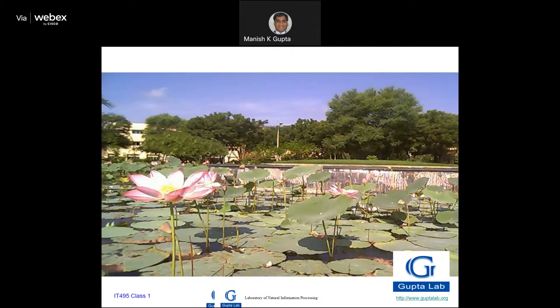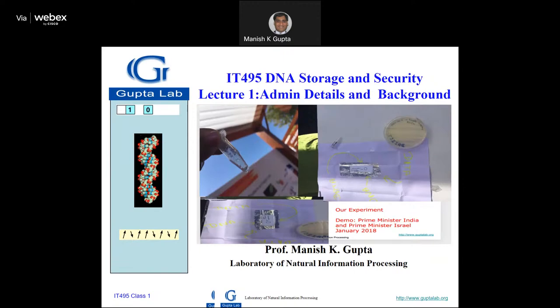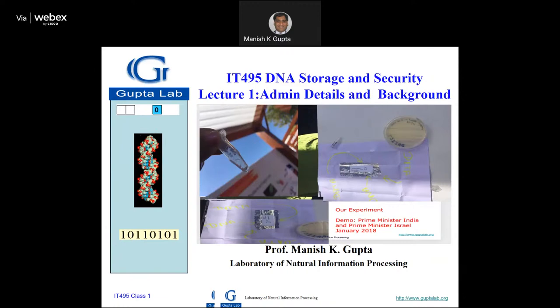We have also done experiments. We are very much interested in doing everything — theory, software, as well as the experimental stuff. This was a demonstration we gave to the Prime Ministers of India and Israel in 2018. On a small paper, there was DNA, and we stored and written something also in a Petri dish. We stored data on bacteria and retrieved it successfully. Why store on bacteria? Because you can get unlimited copies — bacteria will grow, and you can pick up any bacteria from that generation and retrieve the data. It's robustness in the system.